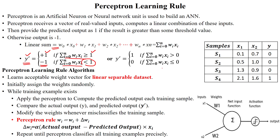Sometimes the desired output is expressed in the form of zeros and ones. When using zeros and ones, we take the threshold value as 0. Whenever the linear sum is greater than 0, we assume that sample belongs to the positive class. Whenever it is less than or equal to 0, we assume it belongs to the negative class. The threshold value depends on the desired output of the given dataset.